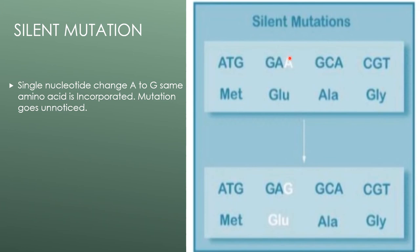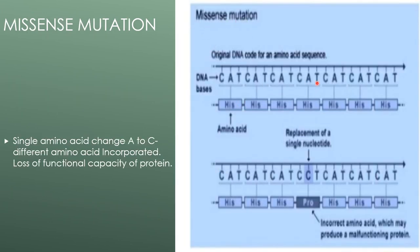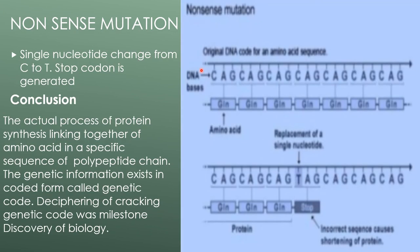Silent mutation: here you can notice there is a change in a single nucleotide — A was changed to G — but the same amino acid is incorporated and the mutation goes unnoticed. This is called a silent mutation. In missense mutation, there is a replacement of a single nucleotide; here A, which led to histidine, is replaced by C, giving rise to an incorrect amino acid, leading to the production of a malfunctioning or non-functional protein.